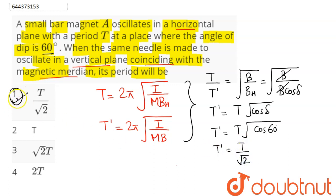Hence option number 1 is the correct answer - when the same needle is made to oscillate in a vertical plane coinciding with the magnetic meridian, its time period will be T/√2.